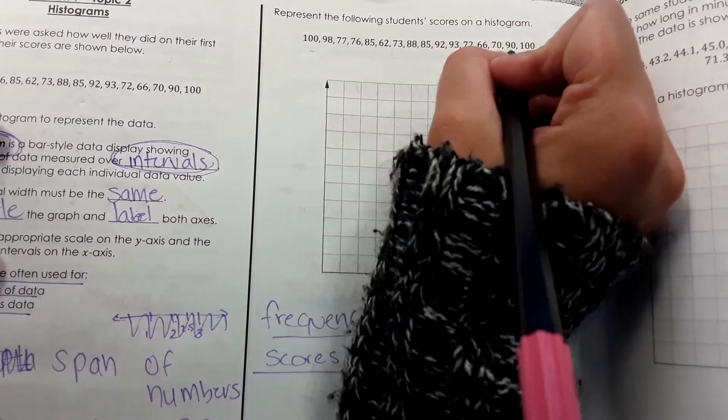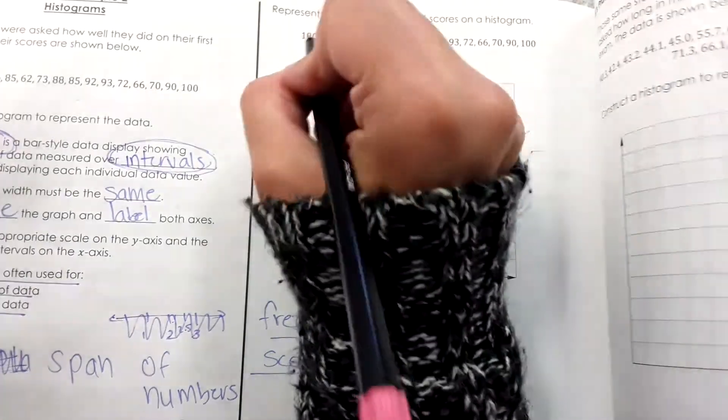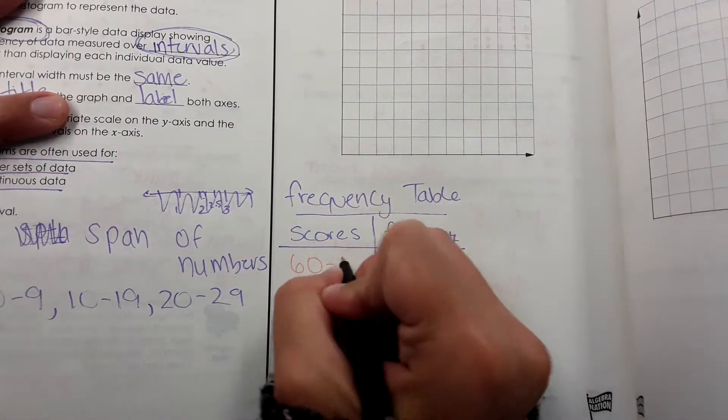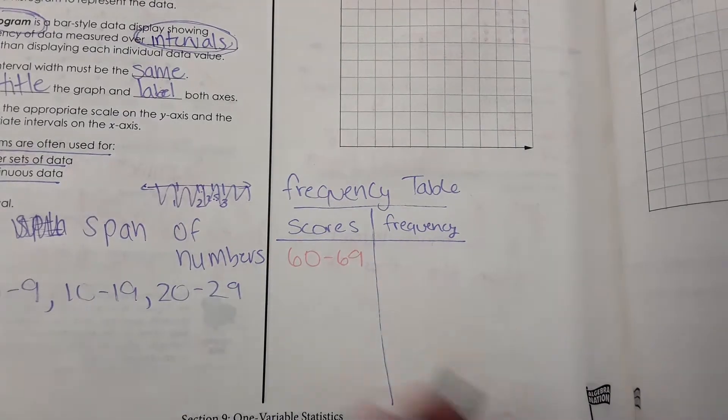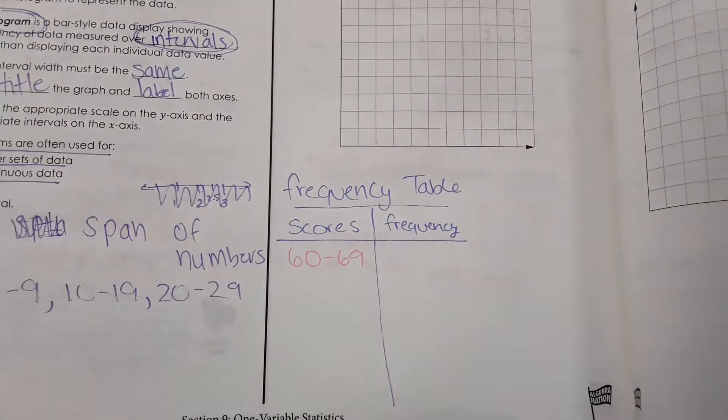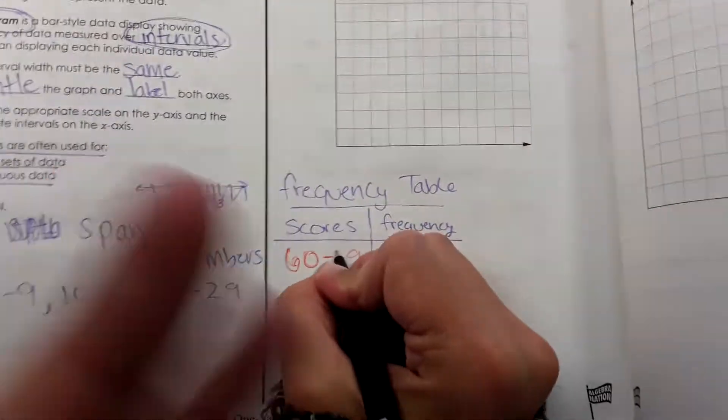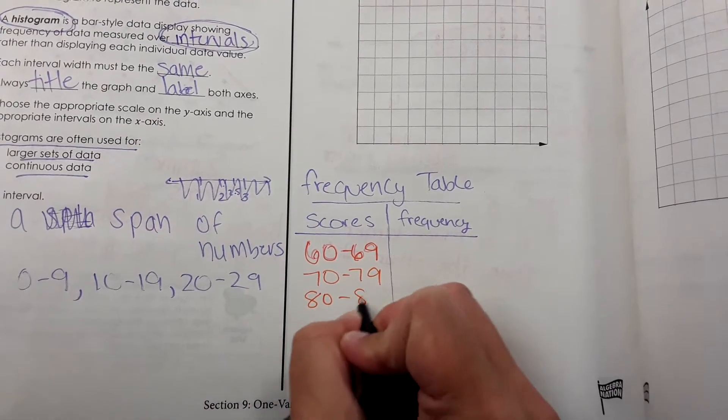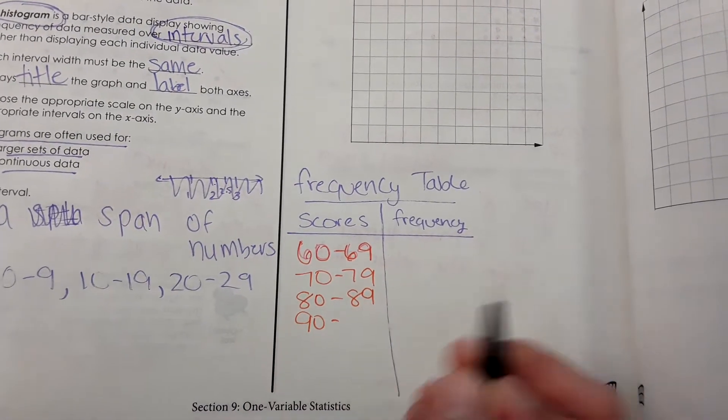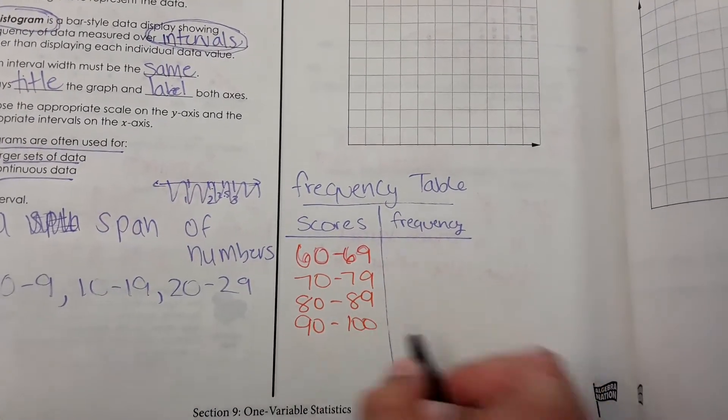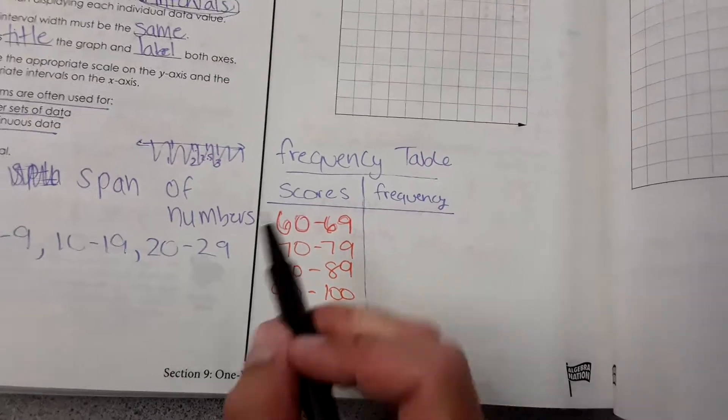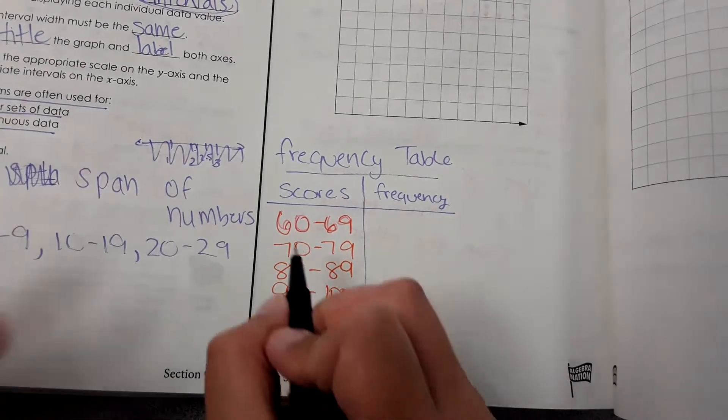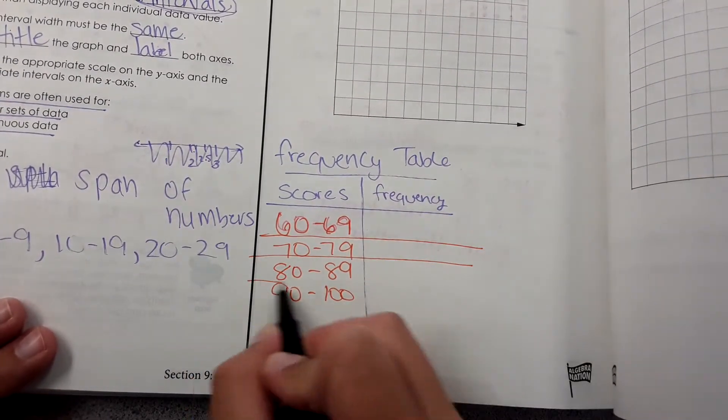When I look at the numbers, the lowest score is 62. The highest score is 100. So I'm going to make intervals here from 60 to 69 on the test. And then I like this kind better. So 60 to 69, then 70 to 79, 80 to 89, and then 90 to technically 99, but I'm just going to make it to 100. The reason why I did 60 to 69 and not 70 is because if I did it to 70, then 70 would fall in both categories, which I can't have. So here's our chart.